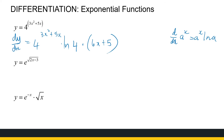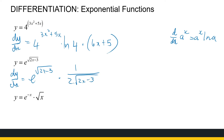Now what about e to the power of a function? For this example I want you to notice that we've actually got three functions: e to the power of something, the square root of something, and 2x minus 3. So there are three things happening, and we're going to use the chain rule twice. The derivative of e to the power of a function is e to the power of that function times the derivative of that function. The derivative of a square root is 1 over 2 times the root, times the derivative of the inside function, which is 2. This simplifies to e to the power of root(2x minus 3) times 1 over root(2x minus 3).